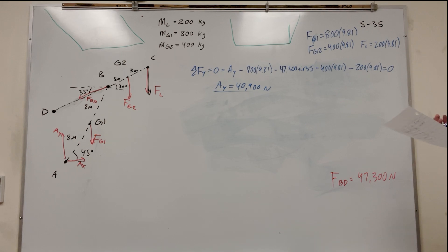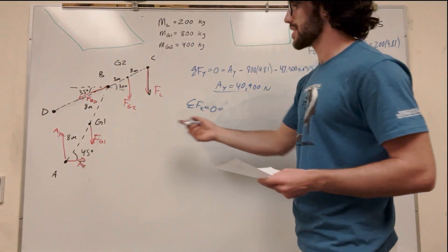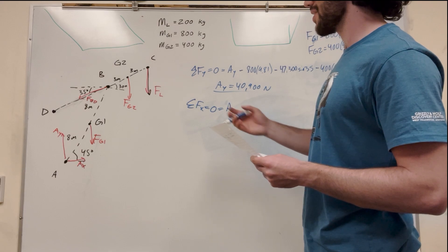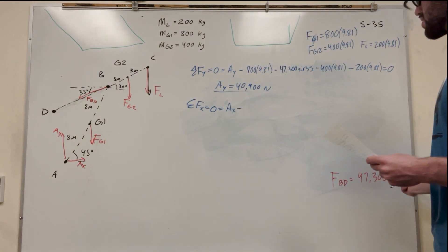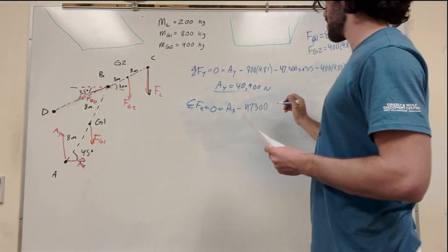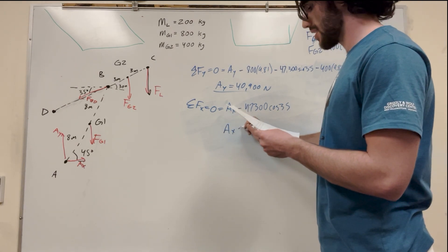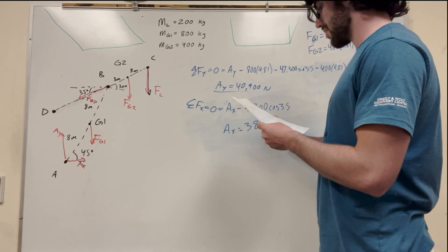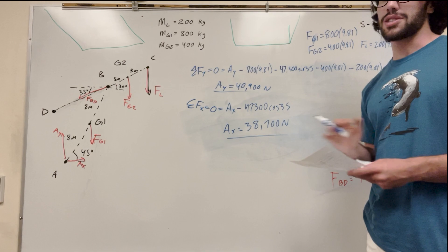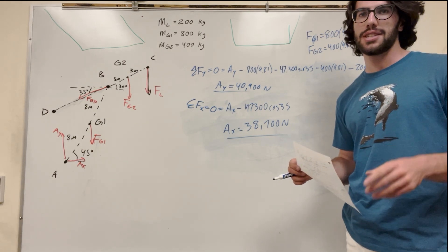Sum of forces in X equals zero. AX is pushing forward, and FBD is pulling backwards, so: AX minus 47,300 cosine 35 equals zero. Moving that over, AX equals 38,700 newtons. So that's how you solve this one — lots going on, but it's the same as any other problem, just with more forces and more vectors. Thanks for watching, see you in the next one.